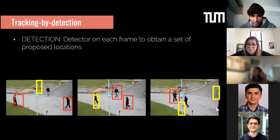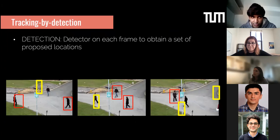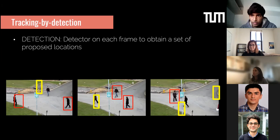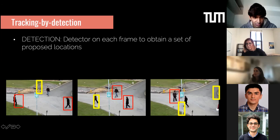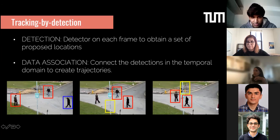Very classically, this problem has been tackled with the tracking-by-detection paradigm. This was already a paradigm we were using during my PhD. It was successful because it decouples the problem into two manageable parts. The first part is detection — applying a detector on each frame to obtain proposed locations, breaking the problem from all pixels down to a subset of interesting regions. Detection is hard on its own: you can see acceptable boxes in red and less acceptable ones in yellow, which could be false positives, and sometimes a person is missed entirely.